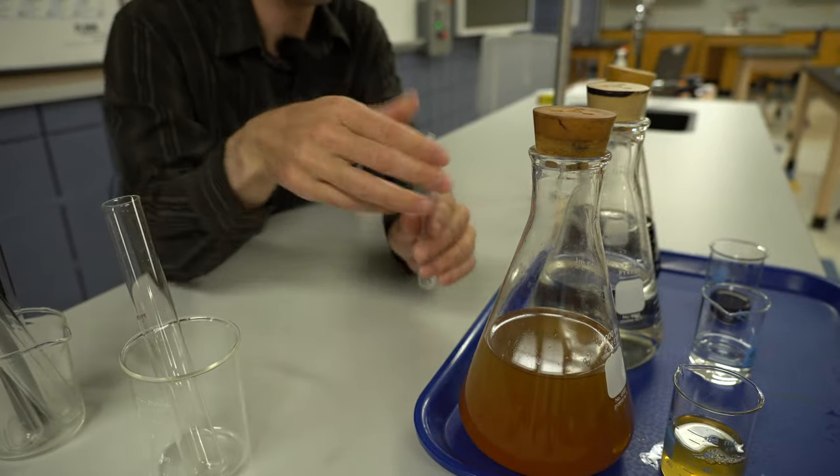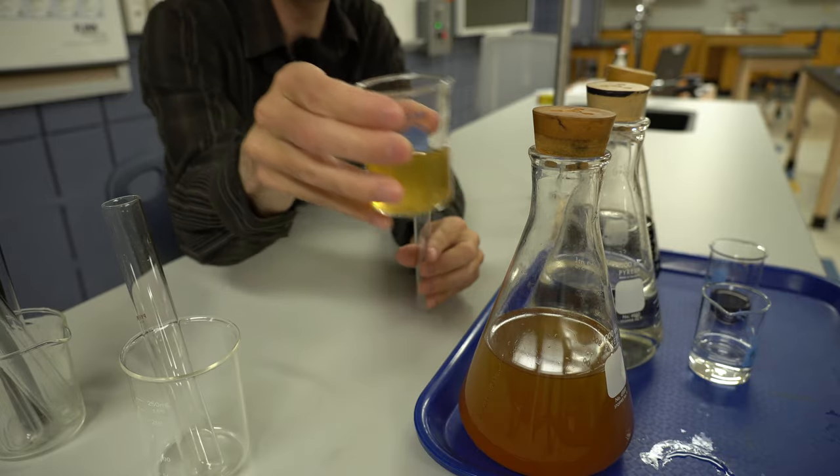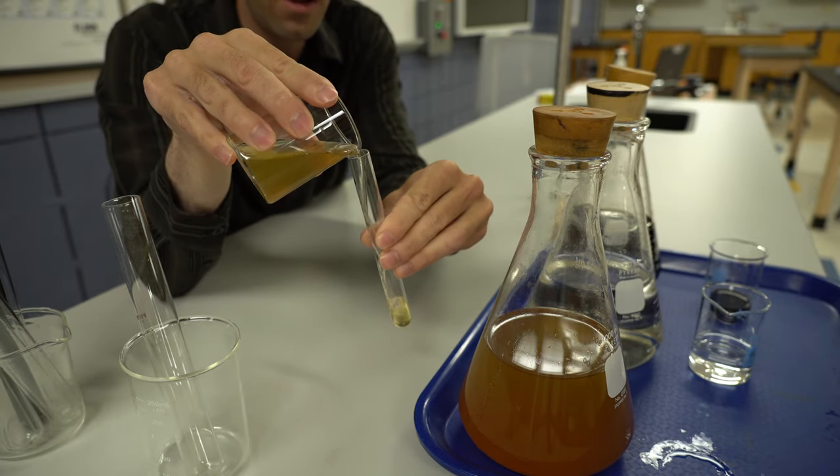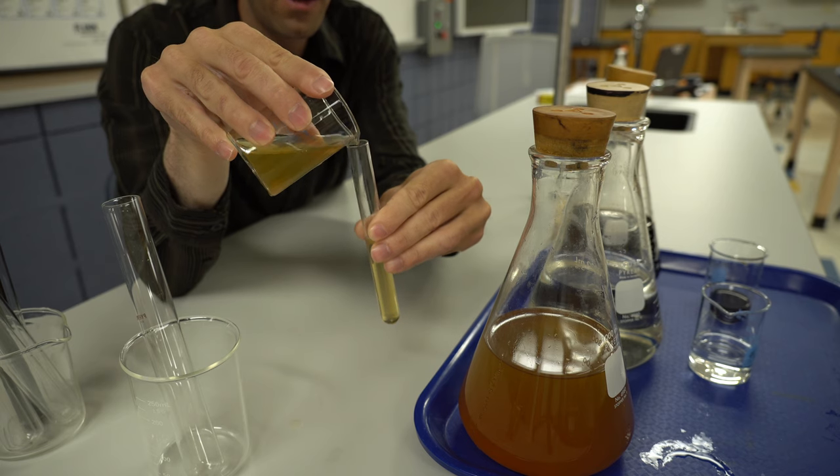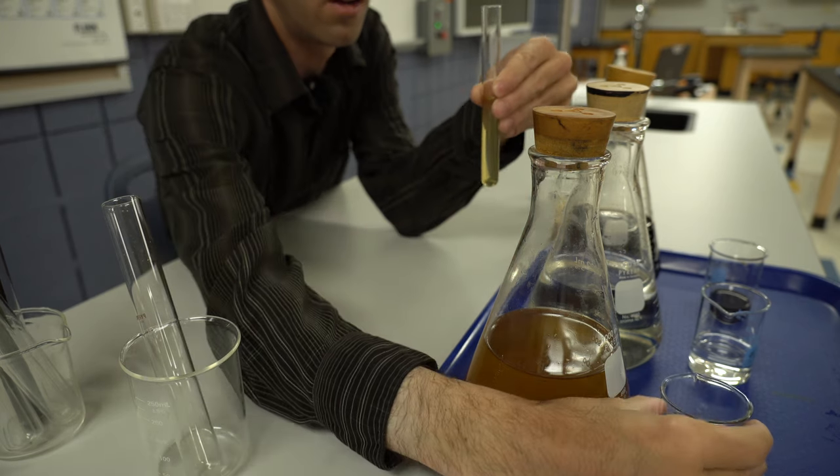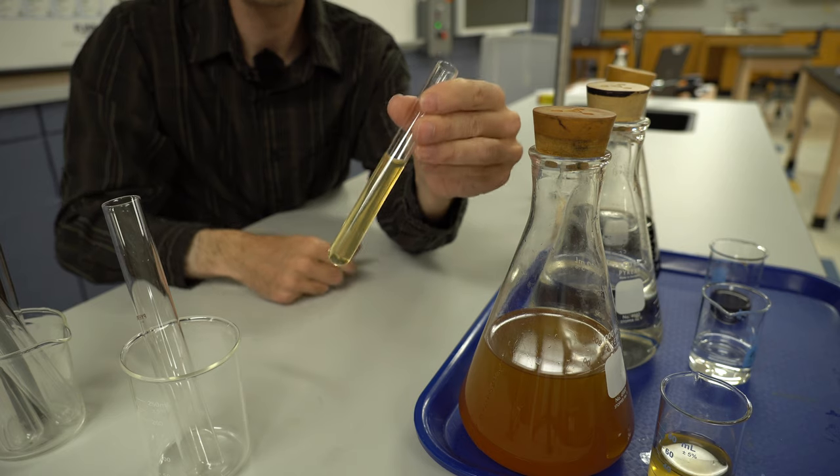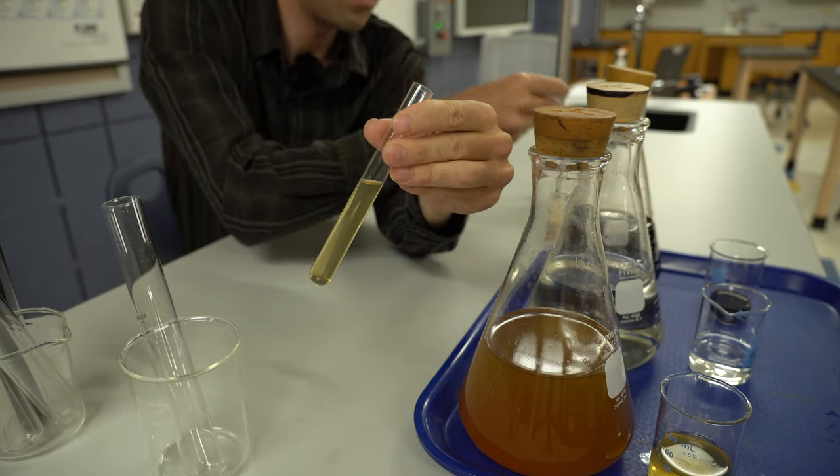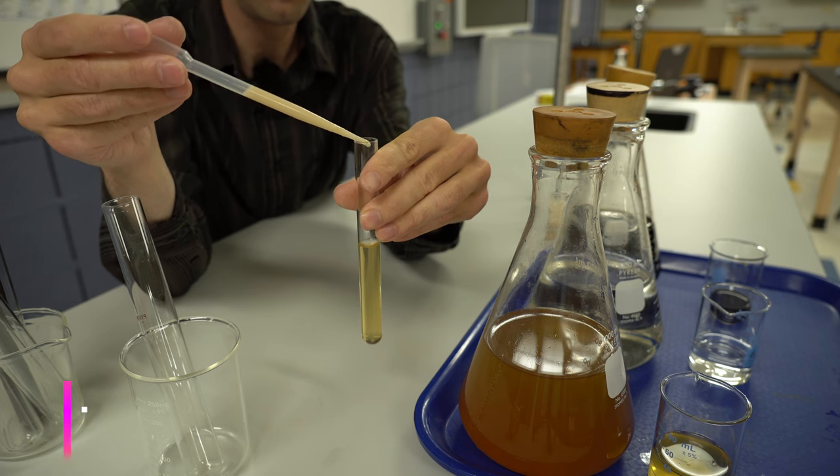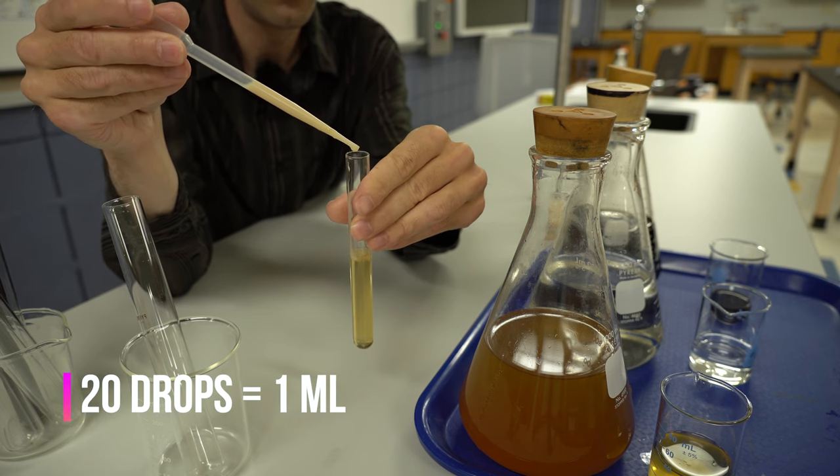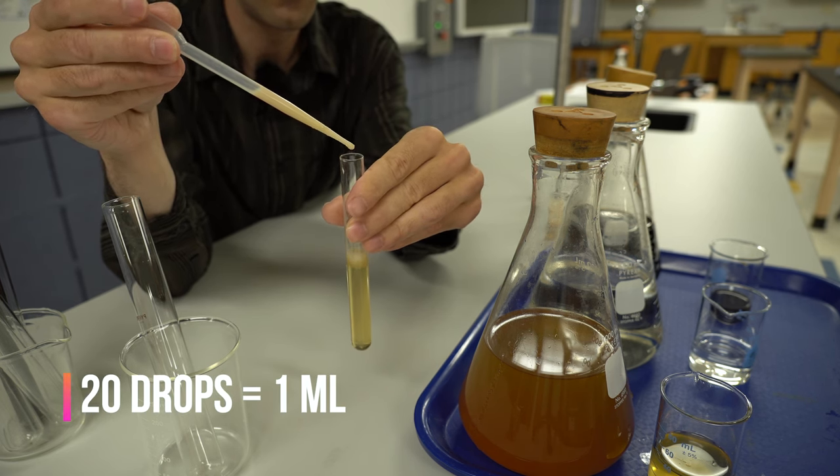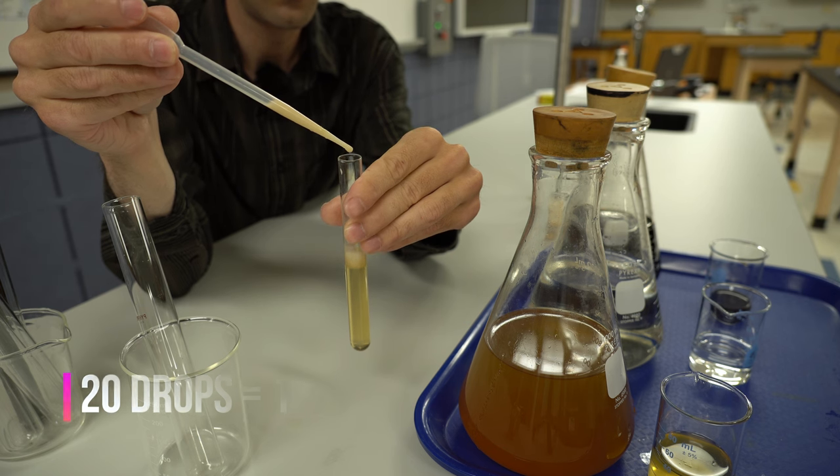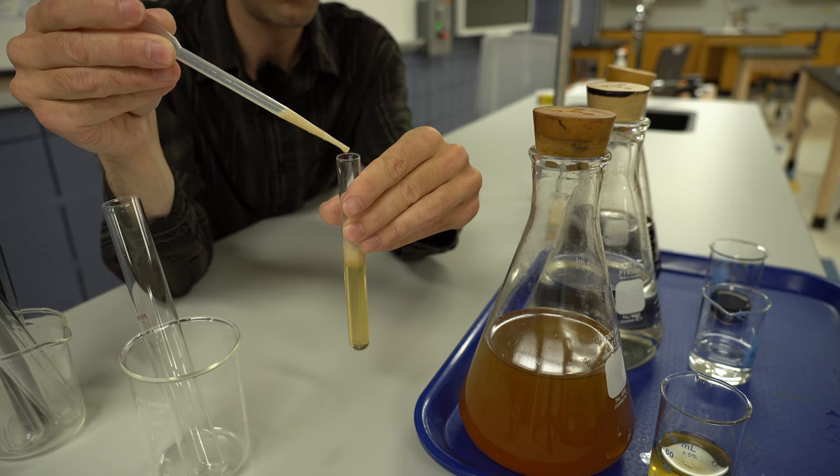We take our test tube. We take our honey solution, which is 20%. We add approximately halfway full of our honey solution. We got our honey solution there. Then we're going to take about 20 drops, which is going to equal one milliliter of our yeast solution. That's 20. Perfect.